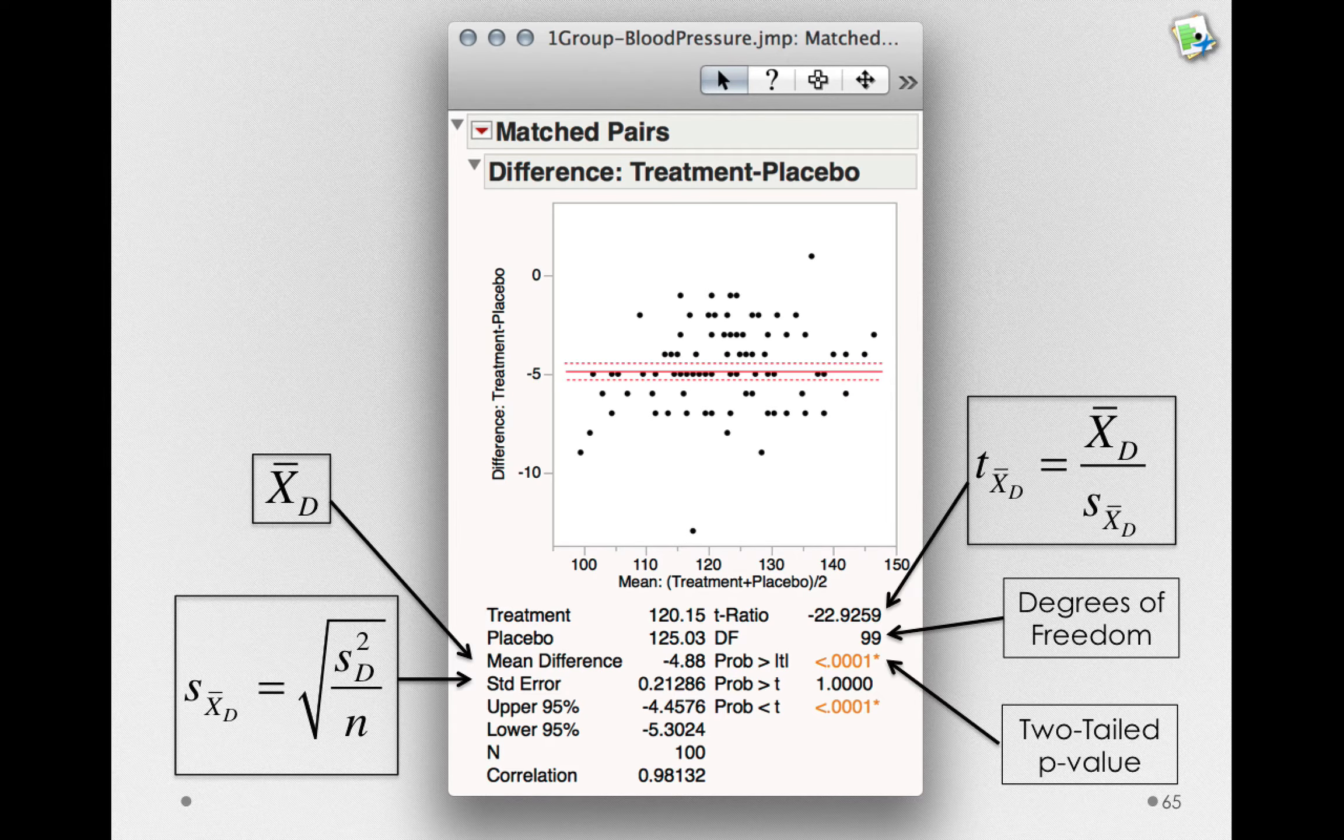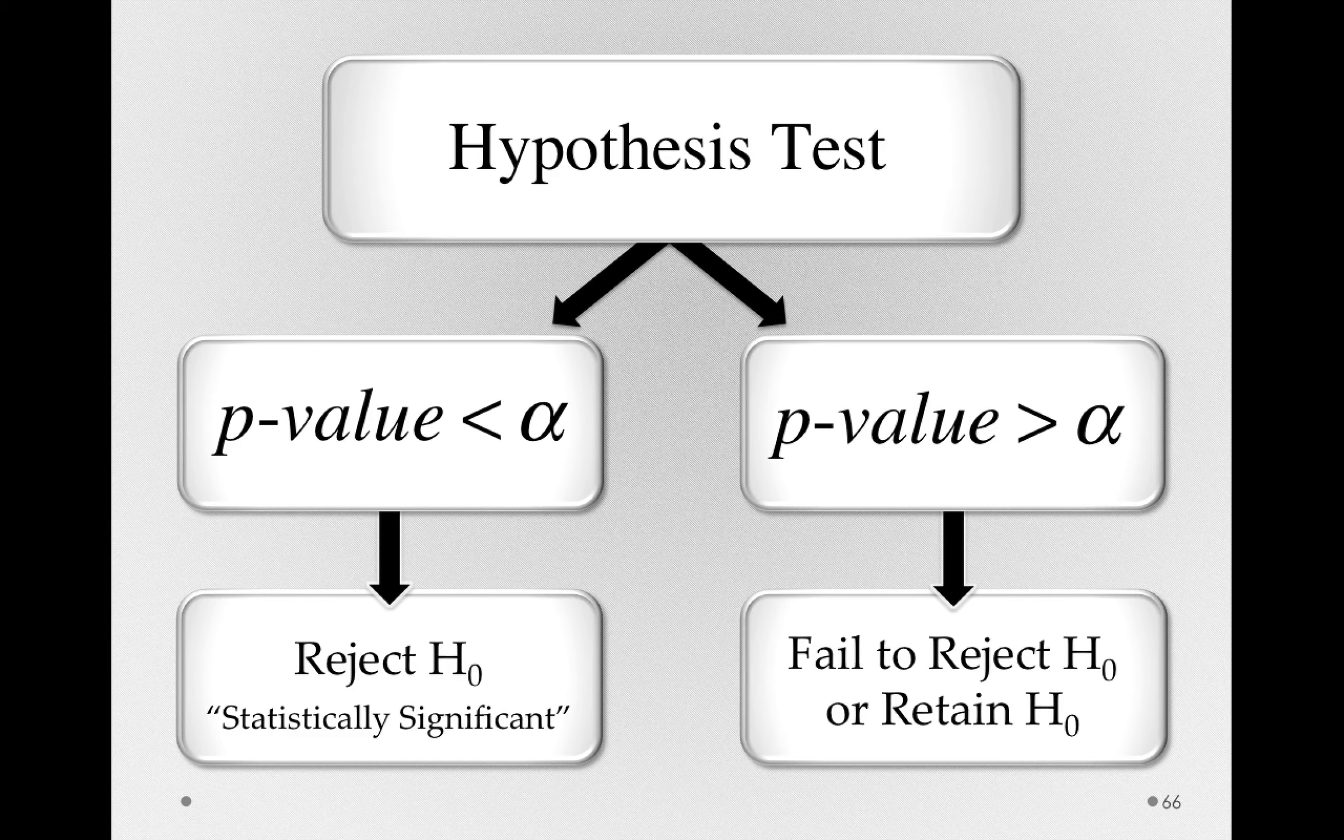Remember, we can always make a decision based on our p-value. If our p-value is less than our standard of evidence, less than alpha, we reject the null hypothesis and say the result is statistically significant.